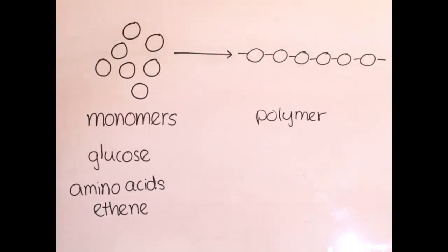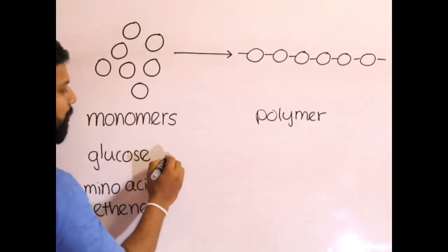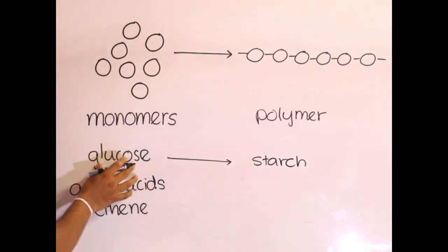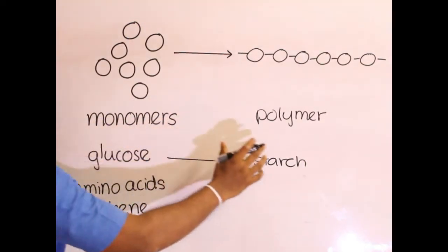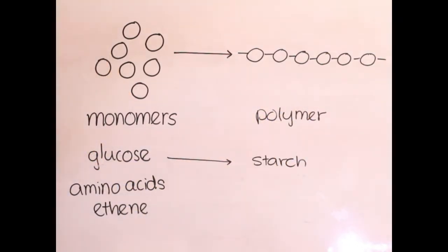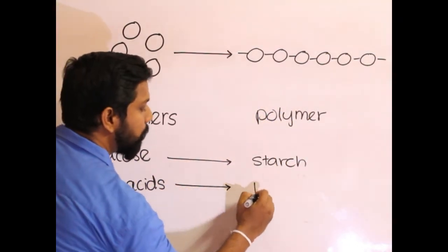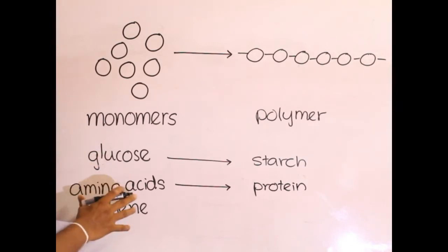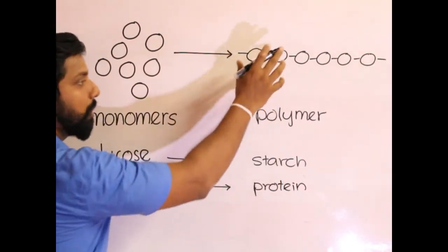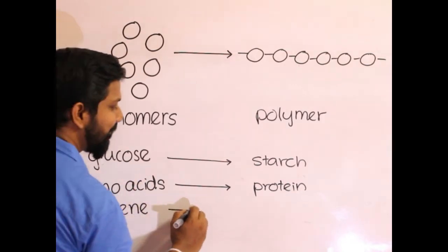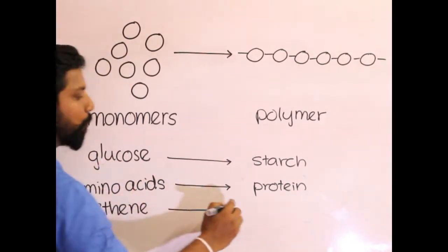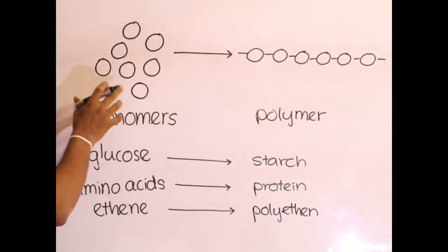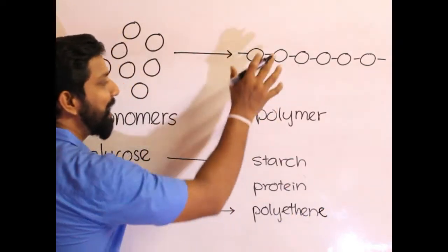For example, when glucose molecules combine they give you starch — so glucose is the monomer and starch is the polymer. Amino acids will react to give proteins — amino acids as the monomers, protein as the polymer. Ethene molecules will react to form polyethene — ethene as the monomer, polyethene as the polymer.